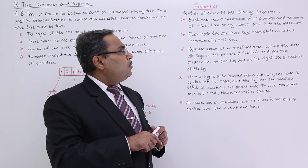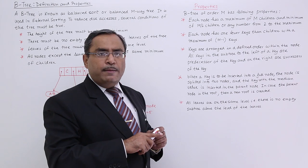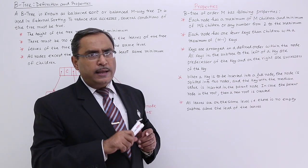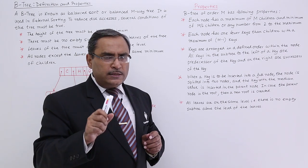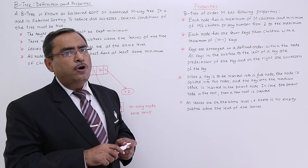Each node has one fewer keys than children and within maximum of M minus 1 keys. I told you this one. M number of ways or M number of links and M minus 1 number of info or key fields.